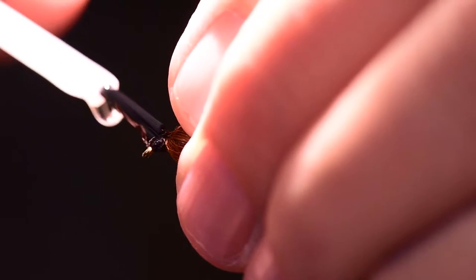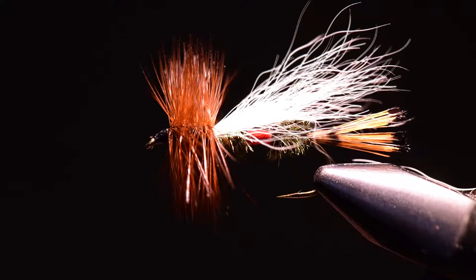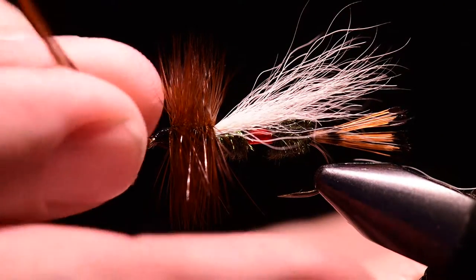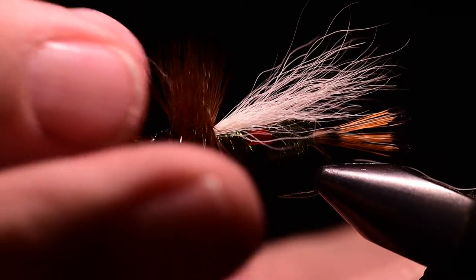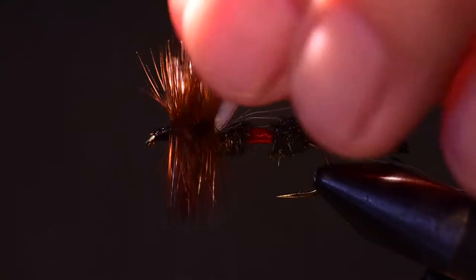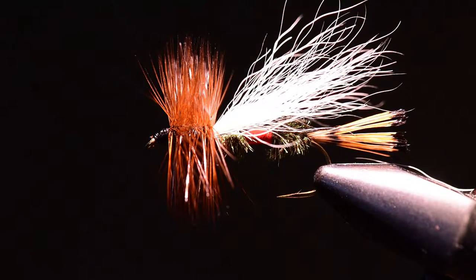Lastly I'm going to place just a little bit of glue on the head itself. If I got any glue in the eye of the hook I can take the last little bit of that hackle fiber and use it to clean out the eye of the hook. The hackle fibers act as a sponge and just pull that glue out and clean up the eye of the hook very neatly.